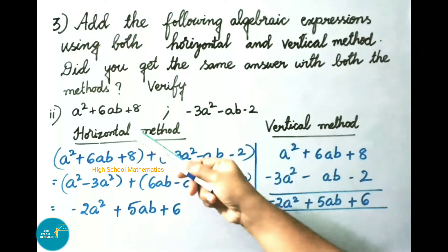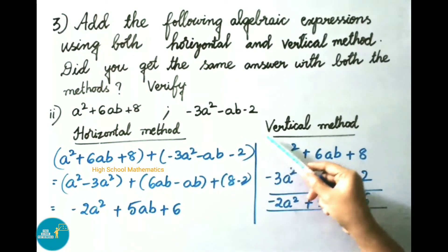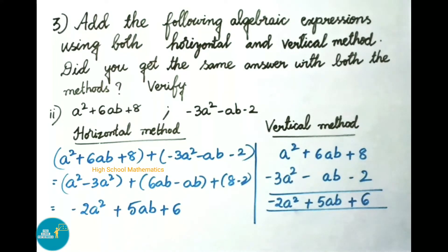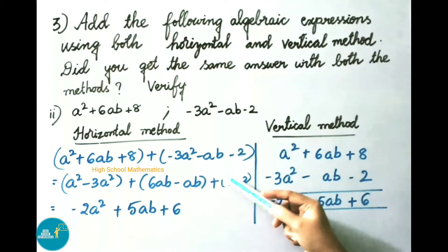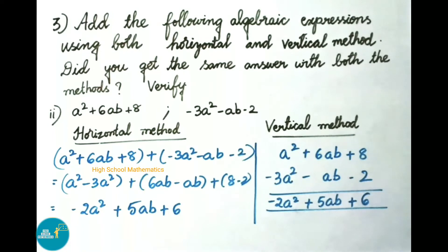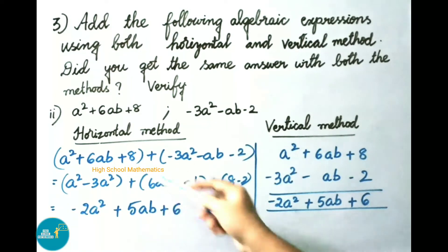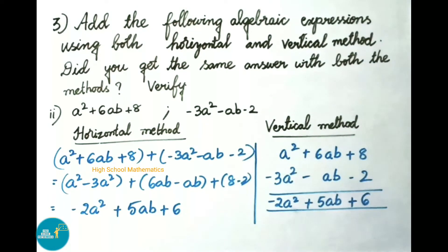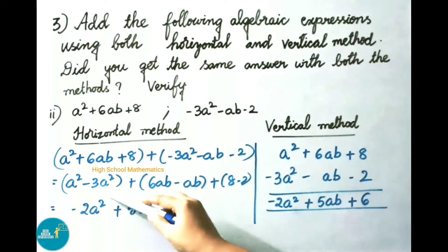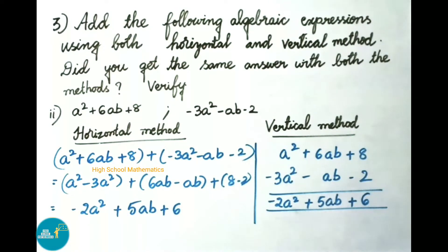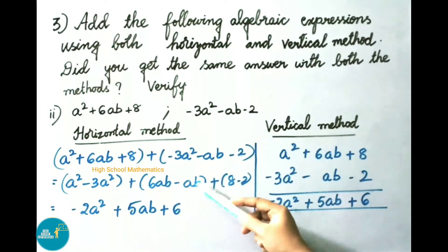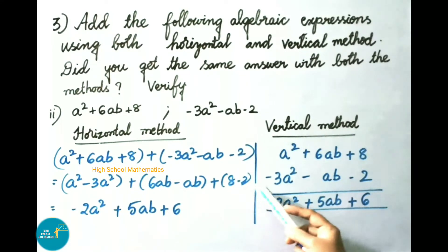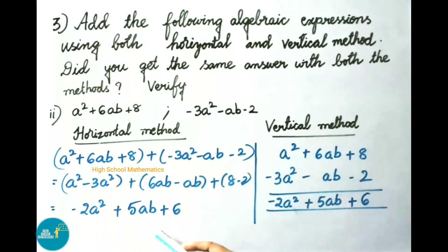See now the second one: a square plus 6ab plus 8, and minus 3a square minus ab minus 2. Using the horizontal method: a square plus 6ab plus 8 plus minus 3a square minus ab minus 2. Rearranging like terms: a square minus 3a square gives minus 2a square; 6ab minus ab gives 5ab; 8 minus 2 gives 6. So the answer is minus 2a square plus 5ab plus 6.